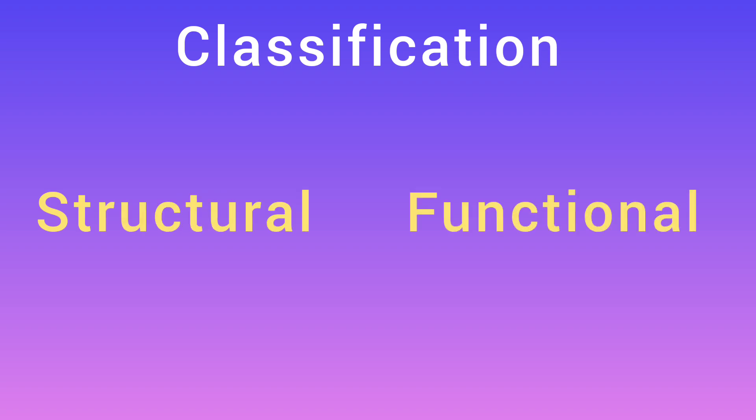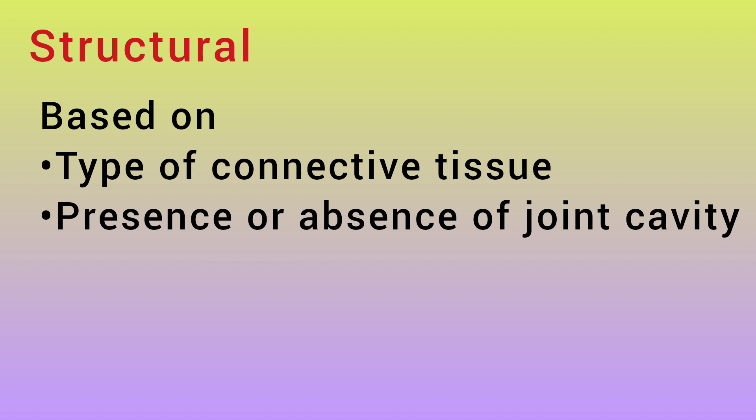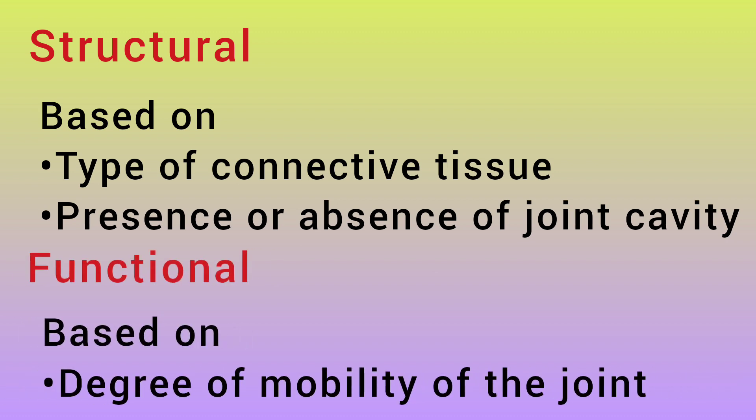Joints are classified in two ways: structural and functional. The structural classification is based on the type of connective tissue joining the bones and whether a joint cavity is present or absent. The functional classification is based on the degree of mobility of the joint.